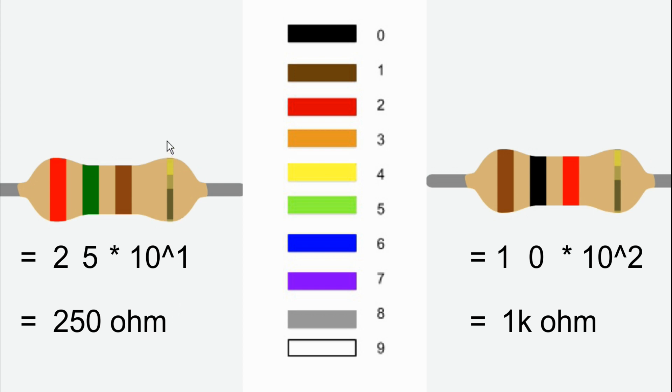The tolerance band mostly is gold or silver color. Once you identify the tolerance band, then you can calculate the resistor value. You can start directly.